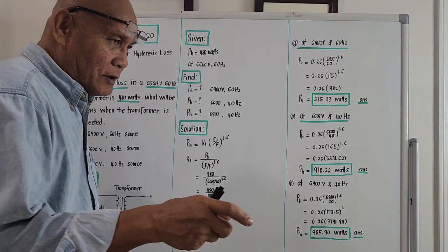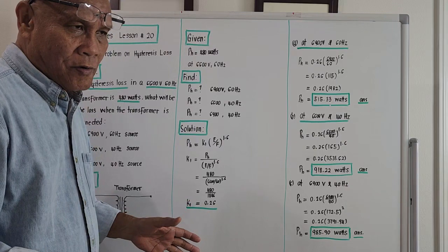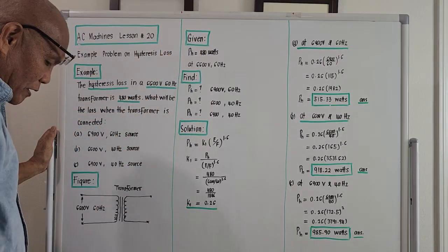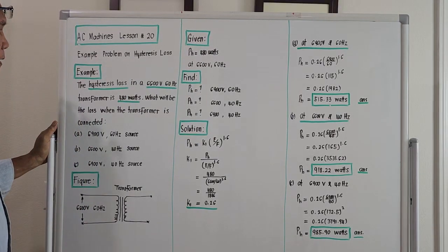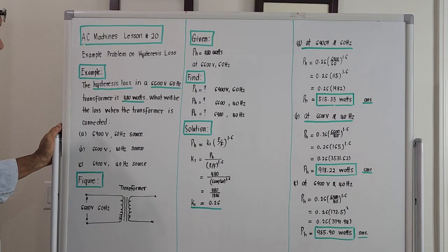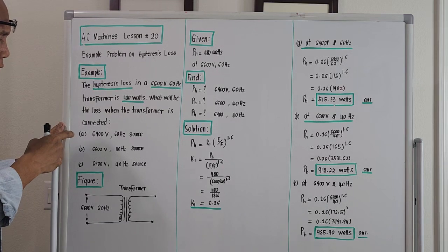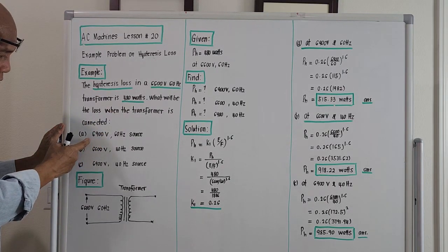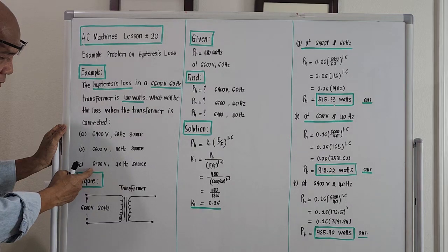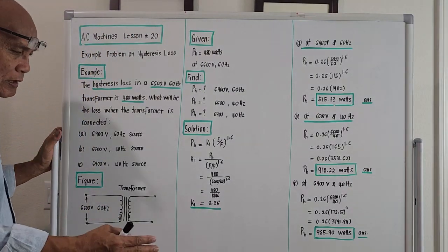One component of the core loss is actually the hysteresis loss. Last time in Lesson 19, I gave you an example on the computation of the so-called eddy current loss. For this morning, we will be solving a problem involving the computation of hysteresis loss. The hysteresis loss in a 6600-volt, 60-Hz transformer is 480 watts. What will be the loss when the transformer is connected to a 6900-volt 60-Hz source, a 6600-volt 40-Hz source, and a 6900-volt 40-Hz source?